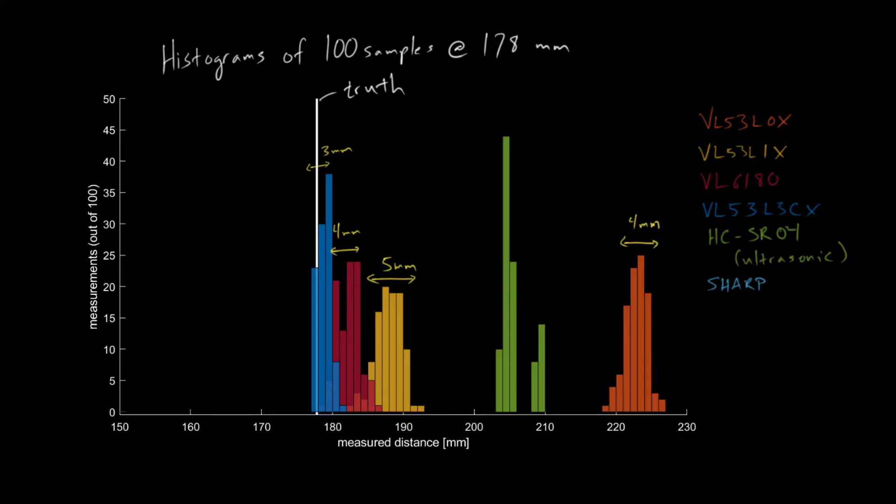The ultrasonic sensor is offset a bit. It's got a little bit more of a spread, taking some data at a couple of different points. The SHARP sensor, it's pretty localized, but then you get this tail going down to lower measurements, and this is what we saw in the previous graph.